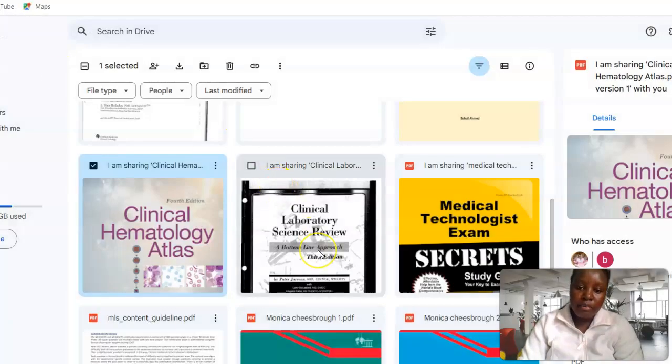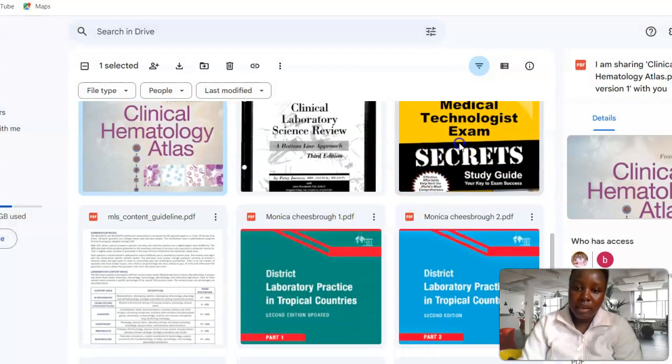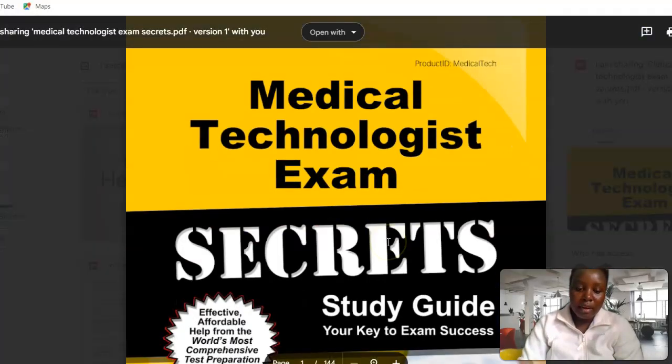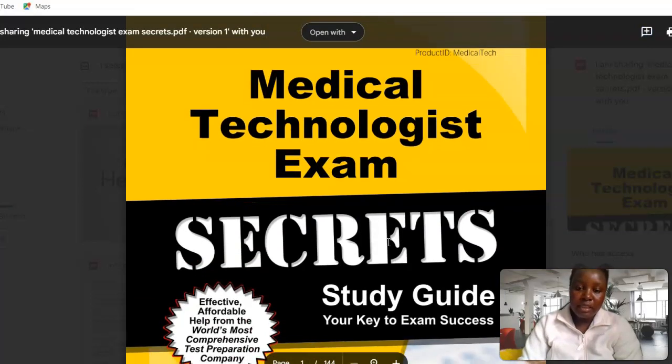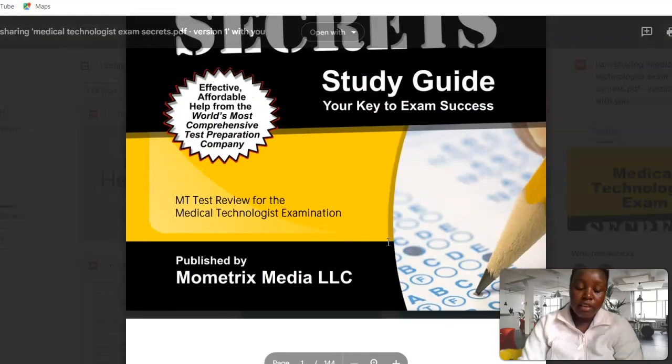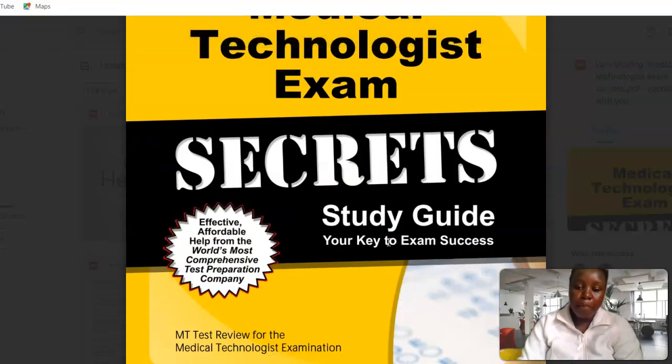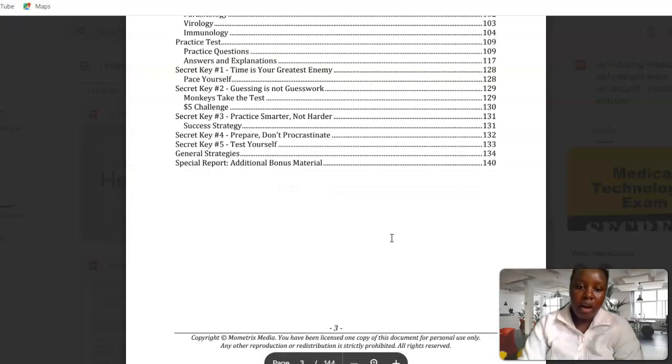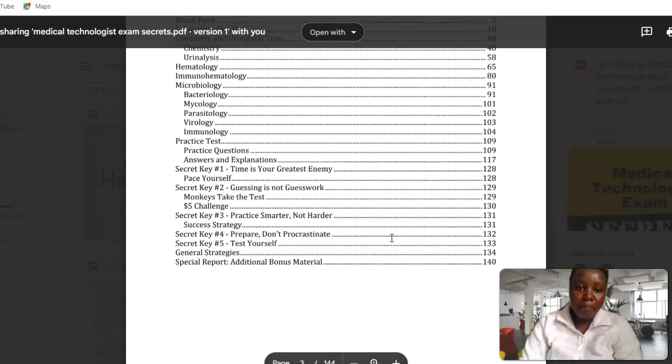A good review book also is Medical Technologist Exam Secrets Study Guide. I found this one very good also. It gives you tips and stories on people who have done it successfully and how they went through. It highlights all the subjects of the lab. As you can see, it has chemistry, hematology, immunohematology, microbiology, parasitology, mycology, bacteriology, virology, immunology, and then it has practice tests.